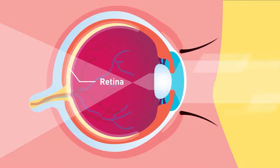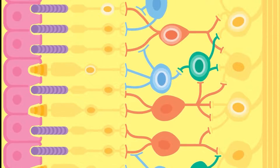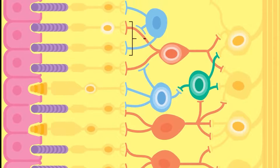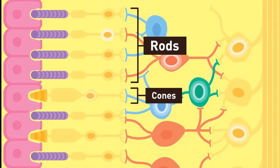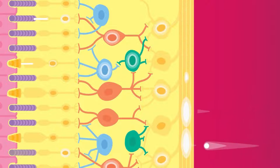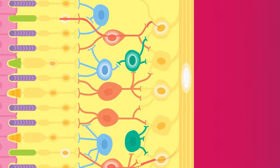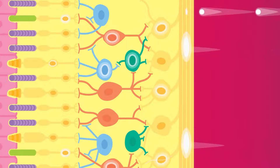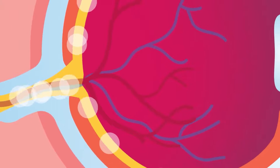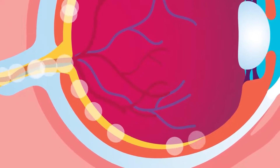The retina is the light-sensitive layer of the eye and bears photoreceptor cells called rods and cones. These cells convert electromagnetic waves from light energy to electrochemical signals that can be interpreted by the brain. These signals are transmitted via the optic nerve, which contains sensory nerves.